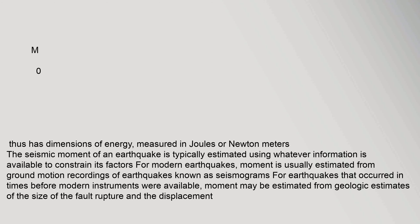The seismic moment of an earthquake is typically estimated using whatever information is available to constrain its factors. For modern earthquakes, moment is usually estimated from ground motion recordings known as seismograms. For earthquakes that occurred before modern instruments were available, moment may be estimated from geologic estimates of the size of the fault rupture and the displacement.